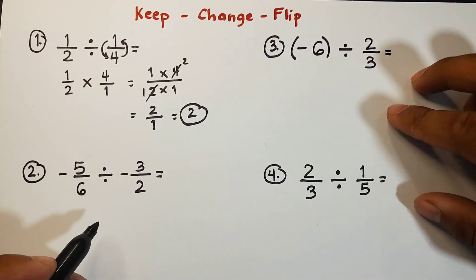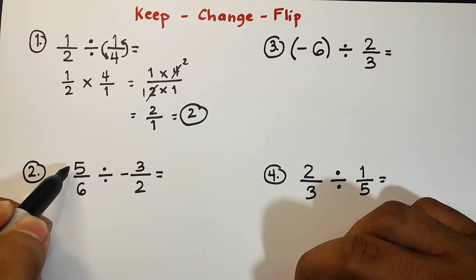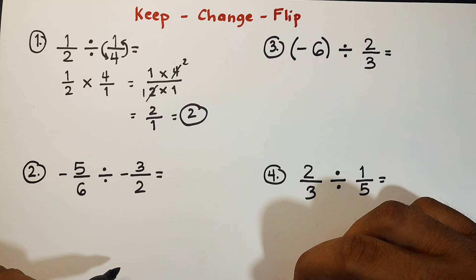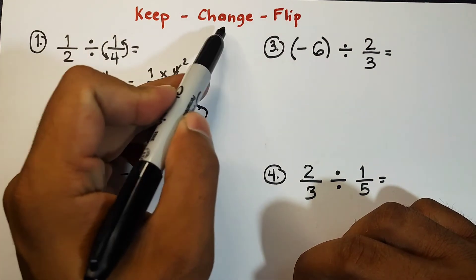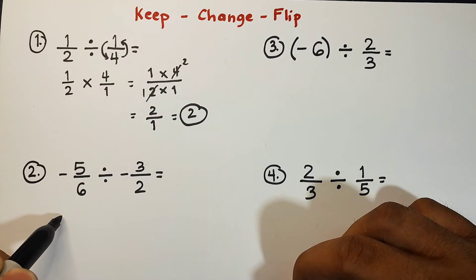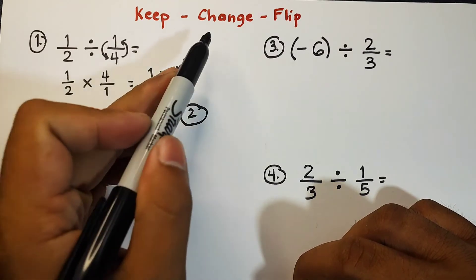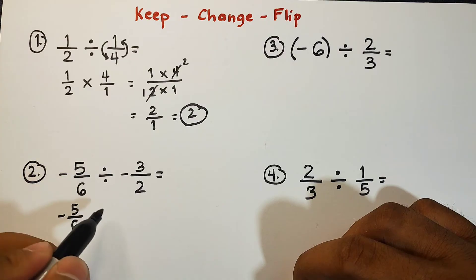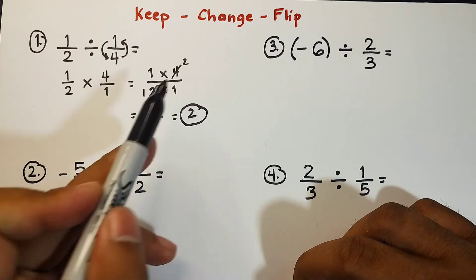Now let's continue with number two. We are given here negative five over six divided by negative three over two. So we will use keep, change, and flip. Keep, we have to copy negative five over six. Change, change the operation to multiplication. Flip.